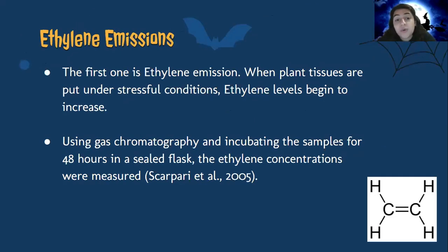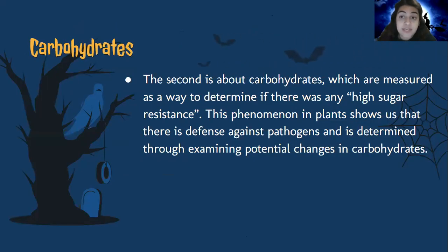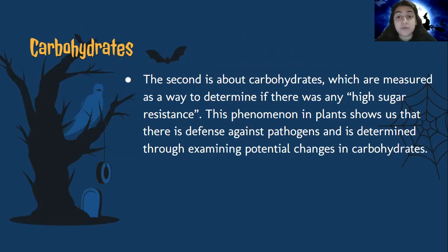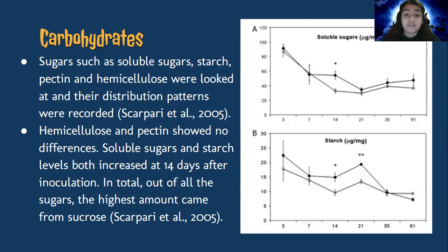The first mechanistic change is ethylene emission. When plant tissues are put under stressful conditions, ethylene levels begin to rise. Looking at the graph, you can see the difference in ethylene levels across days after infection — they remain constant for a while and then drop down once tissue dies. The second change involves carbohydrates, which are examined to determine if there is any high sugar resistance. This phenomenon in plants shows a defense against pathogens, examined through potential changes in carbohydrates. Higher levels of starch in infected tissues may be due to some soluble sugars mobilizing to starch as a way to store extra carbohydrates for the infected plant.